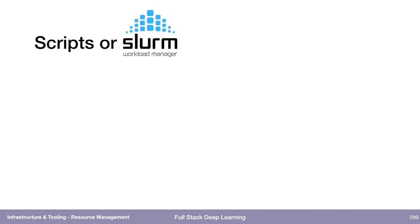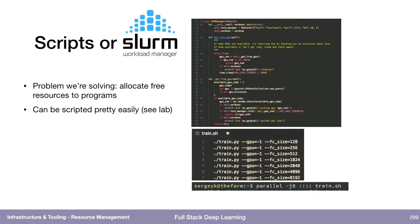A better version would be to use the computer to allocate resources for us. There are free resources and then there are programs that want to use them. It's not a difficult problem in itself — we can actually write a pretty short script to solve it for the problem of allocating GPUs on a single machine, which is what we're going to do in lab. It's about 50 lines of code.